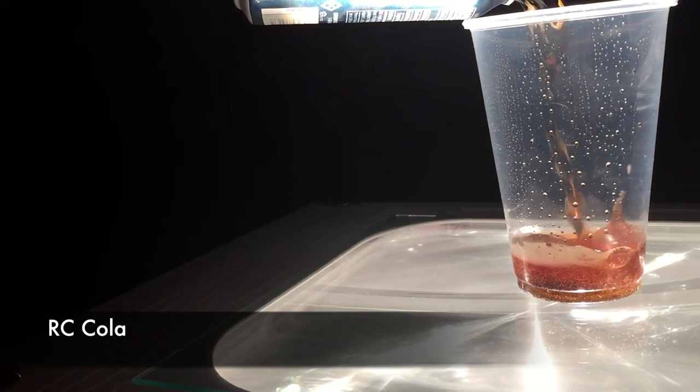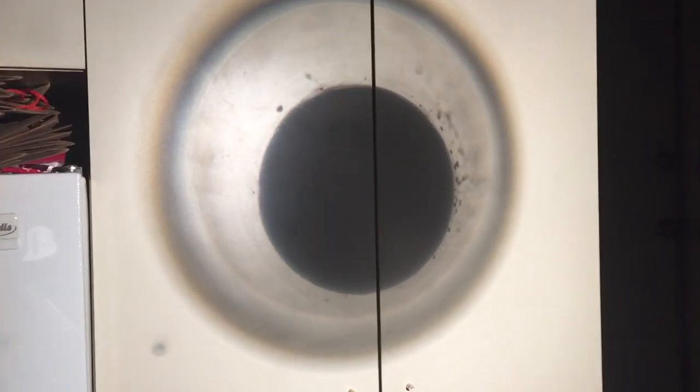Here's an RC Cola, so a little bit darker. So you might not be able to see this one, you think. And as we wait and watch, just like the 7-Up, when the bubbles disperse and the CO2 goes away, you're able to see through. So it is a solution.